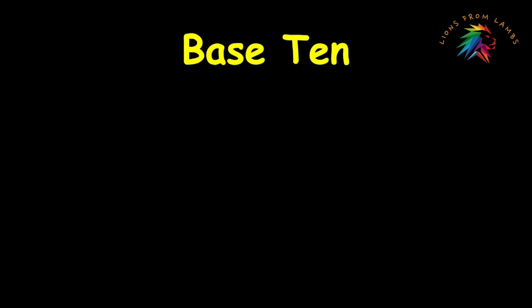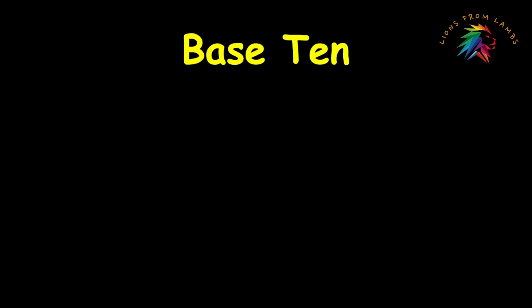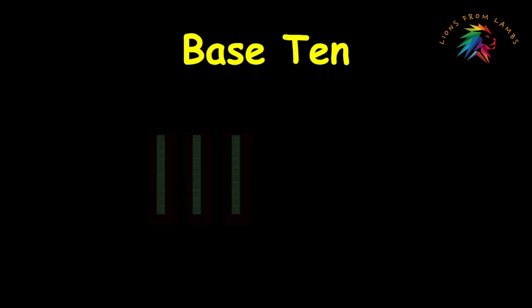So if we look at one unit, one unit has a value of one. Now if we take, for example, four units — one, two, three, four — they have a value of exactly four. Now if we look at a rod, one rod has a value of 10. So then if we took three rods, that would have a value of 10 plus 10 plus 10, which equals 30. When we see three rods together, it's 30; four rods would be 40; or five, 50.